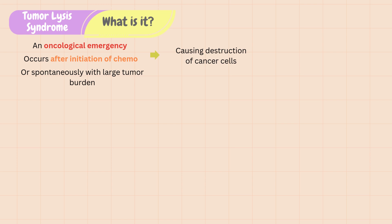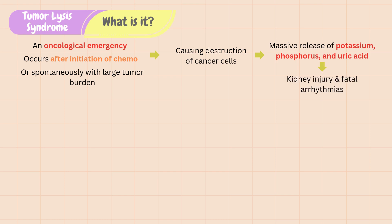When cancer cells lyse or die, there is a massive release of cell contents into the bloodstream, such as potassium, phosphorus, and uric acid. These elevated levels of electrolytes in the blood cause kidney injury and fatal arrhythmias.